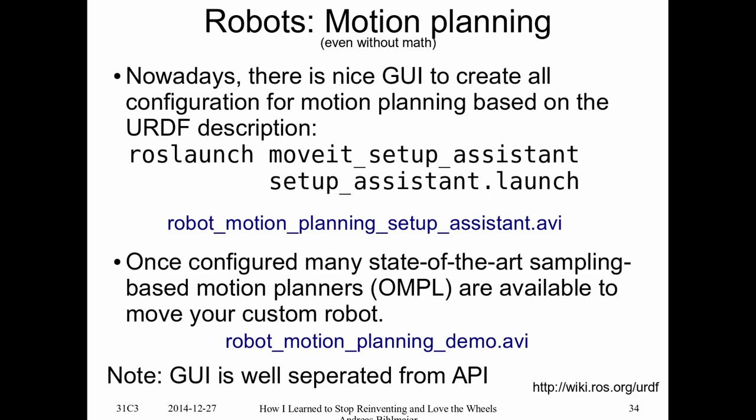And if you hate GUIs, that's fine — everything I'm showing is well separated between GUI components and the code. So if you want to do path planning not through a GUI but from your code because you recognized an object in your image, of course there is a Python and C++ API to tell the robot to go to a point. You don't need to go through the GUI.